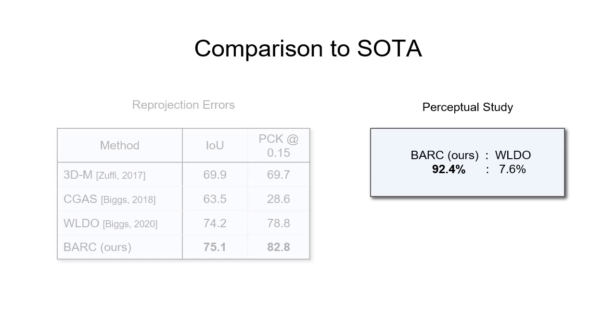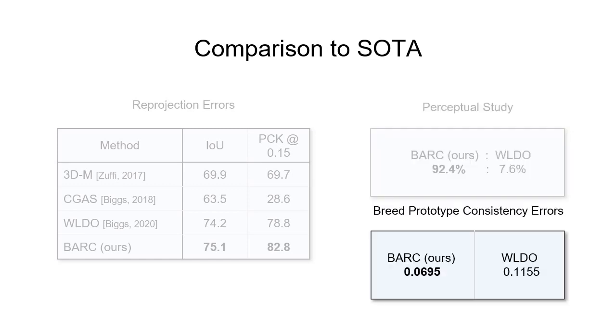We compare our method to the previous state-of-the-art method called Waldo. Study participants judge our 3D shapes to be more representative of the breed by a significant margin, 92.4% versus 7.6%.